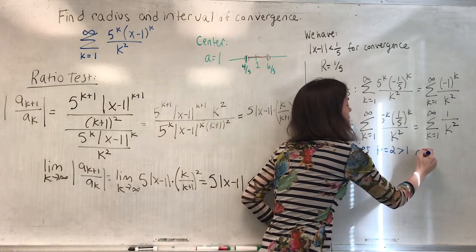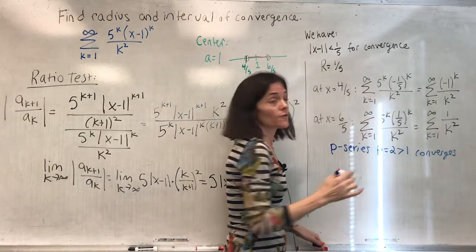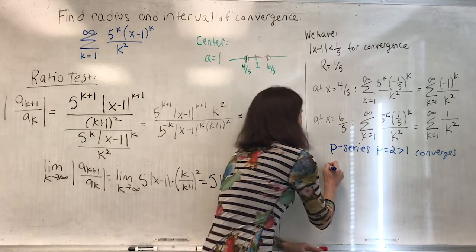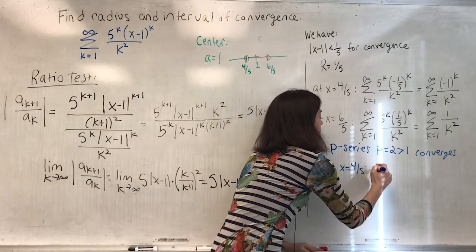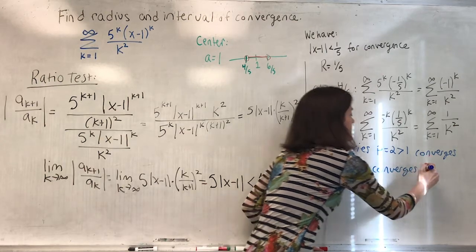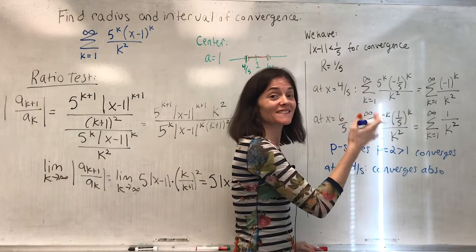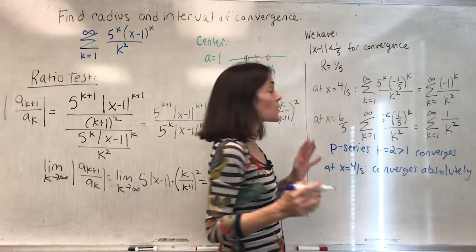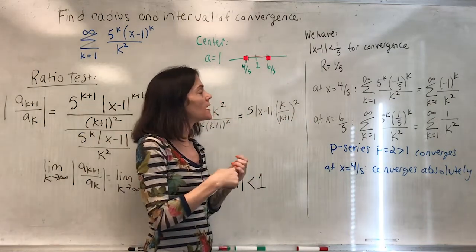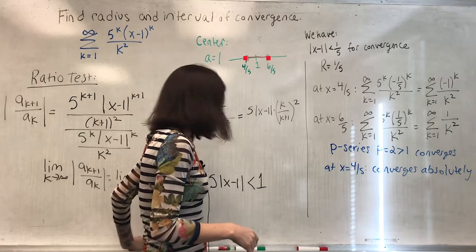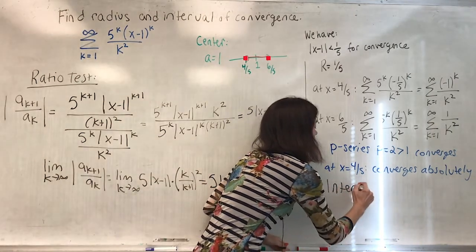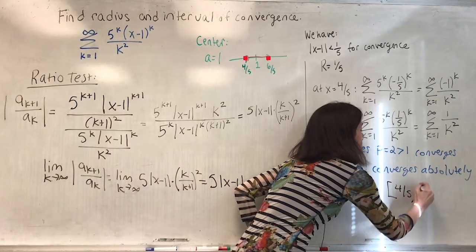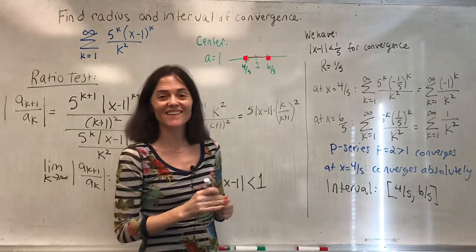At x = 6/5, this is a p-series with p = 2, which is greater than 1, so it converges. At x = 4/5, the series is alternating, and its absolute value gives the same p-series with p = 2, so it converges absolutely. Both endpoints are included in the interval of convergence. The final interval of convergence is the closed interval [4/5, 6/5].